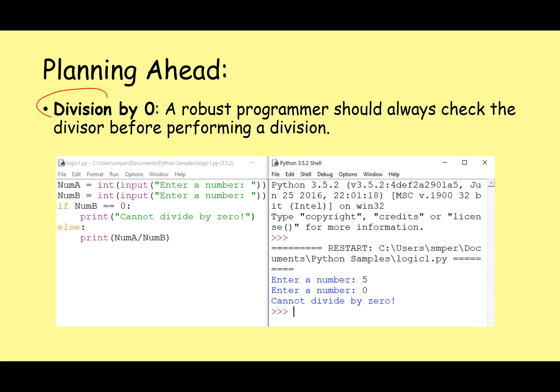Division by zero is a classic example. We should always do some sort of check whenever we're going to do a division, just to make sure we are not dividing by zero. Something very simple like this — just checking if the divisor is zero before going ahead and doing that division.